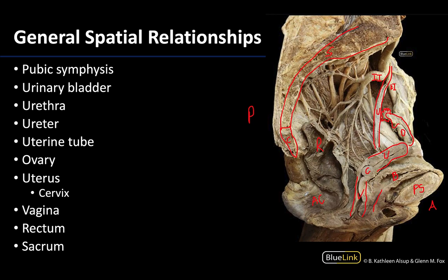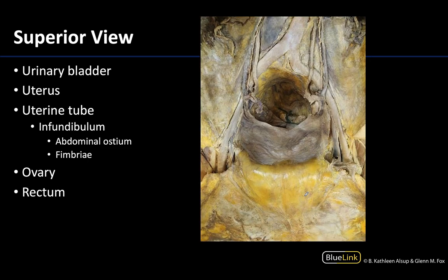This is a superior view on the individual with the uterus. The uterus is located right here and is the fairly dominant structure, but it's also covered with peritoneum. The broad ligament is extending on either side of the uterus towards the lateral pelvic wall. The uterine tubes are superior and extending laterally, covered with peritoneum — specifically the mesosalpinx of the broad ligament — and you can see portions of the uterine tube.